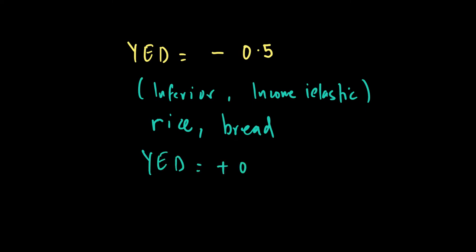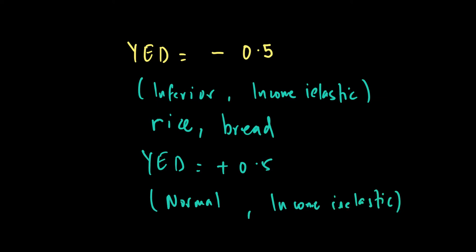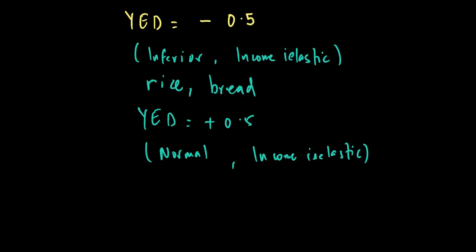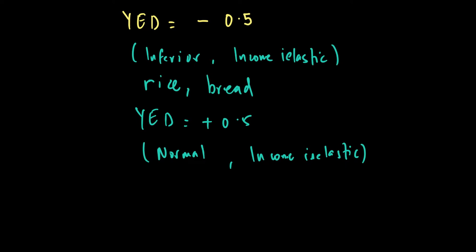If YD = +0.5, we are looking at an income inelastic but normal good. The positive sign means it's a normal good, and the value of 0.5 means it is still income inelastic — you consume more of the good when income rises, but not significantly. Better quality rice could fall in this category. One can argue that a YD with an absolute value lower than 1, whether positive or negative, represents necessities: a negative value indicates an inferior necessity you may trade up from, while a positive value indicates a normal necessity.